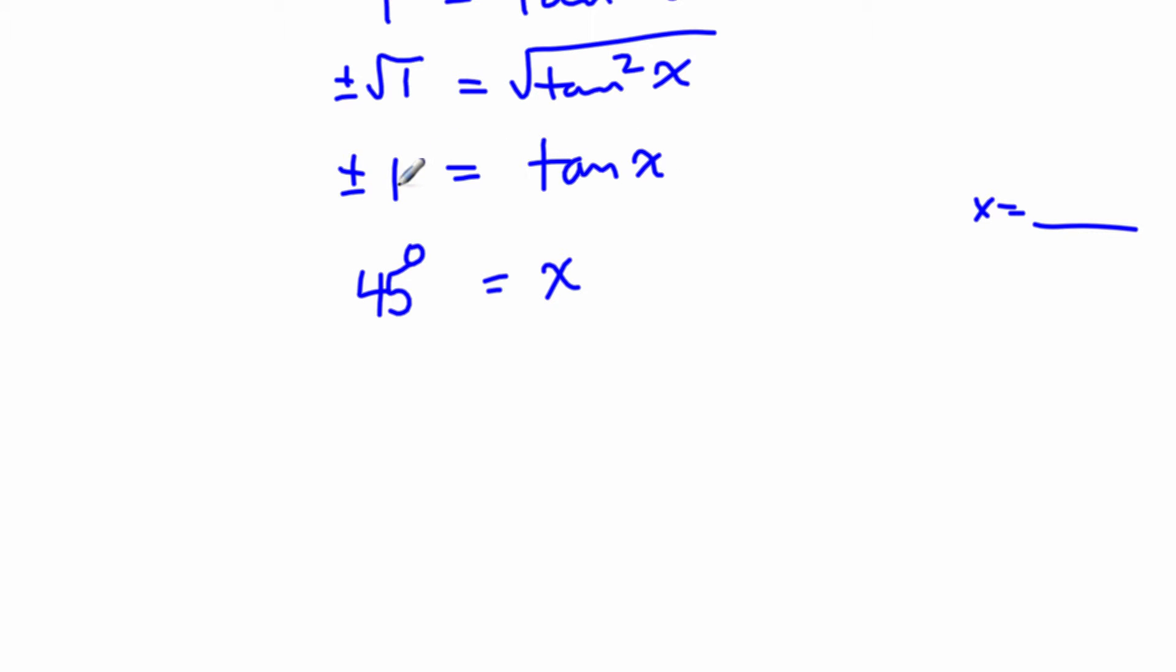So tan x is 1, the angle that the ratio between the opposite and the adjacent sides is equal to 1, is 45 degrees. And 45 degrees, of course, is our reference angle. So it can happen in four places.